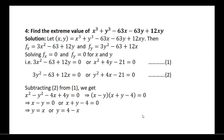Next problem: Find the extreme values of x cubed plus y cubed minus 63x minus 63y plus 12xy. Find the stationary points by equating the partial derivatives to 0, giving equation 1 and equation 2. Subtract equation 2 from equation 1 to get x squared minus y squared minus 4x plus 4y equal to 0.